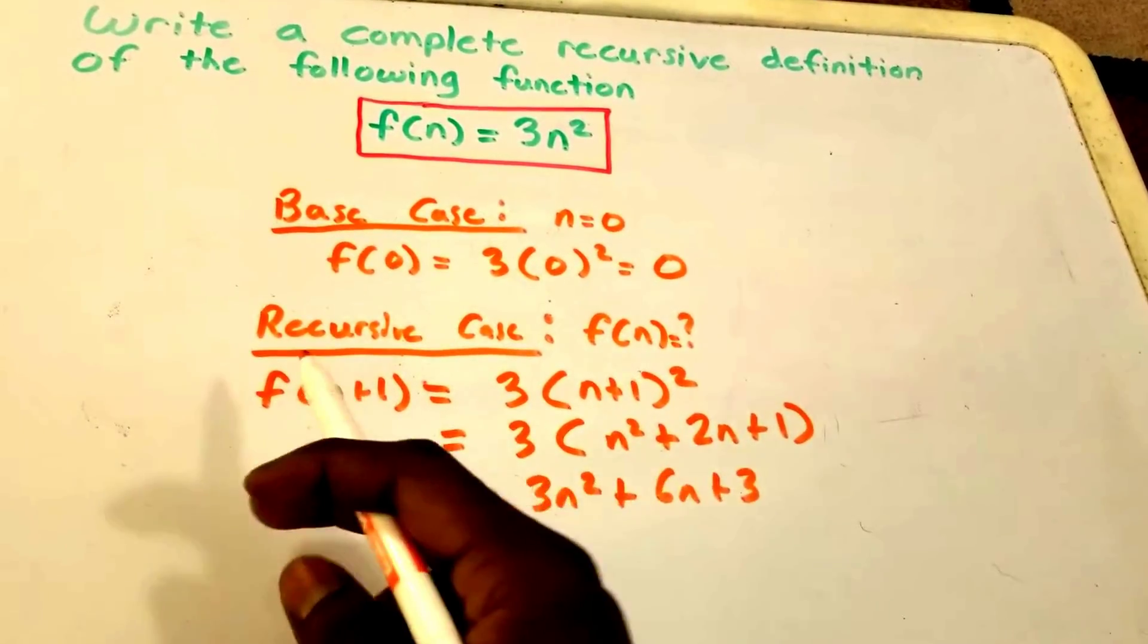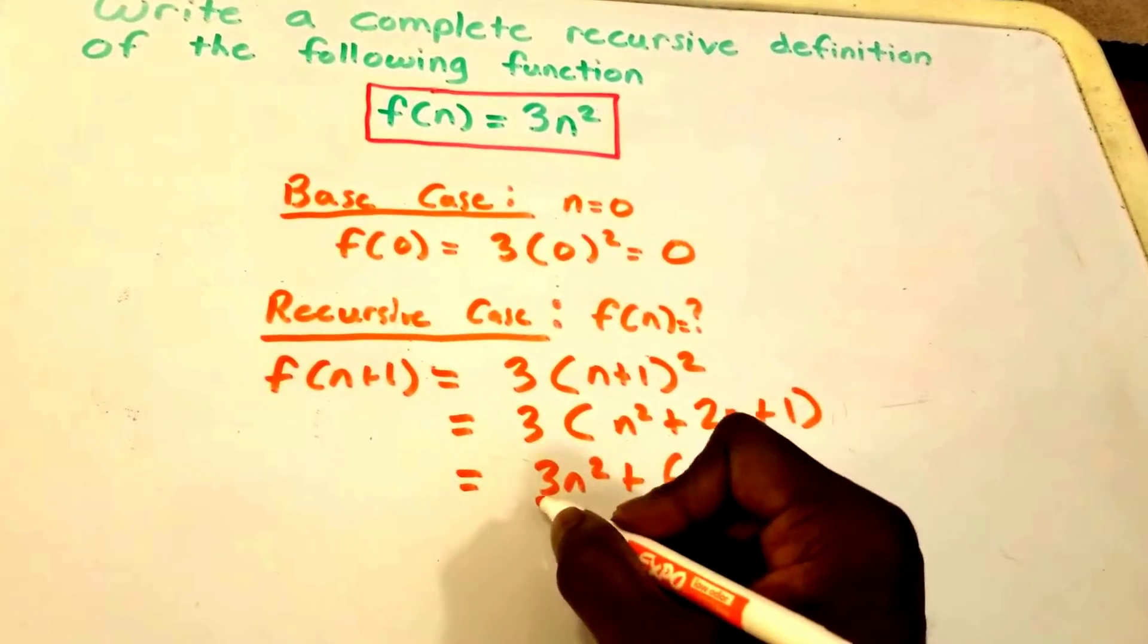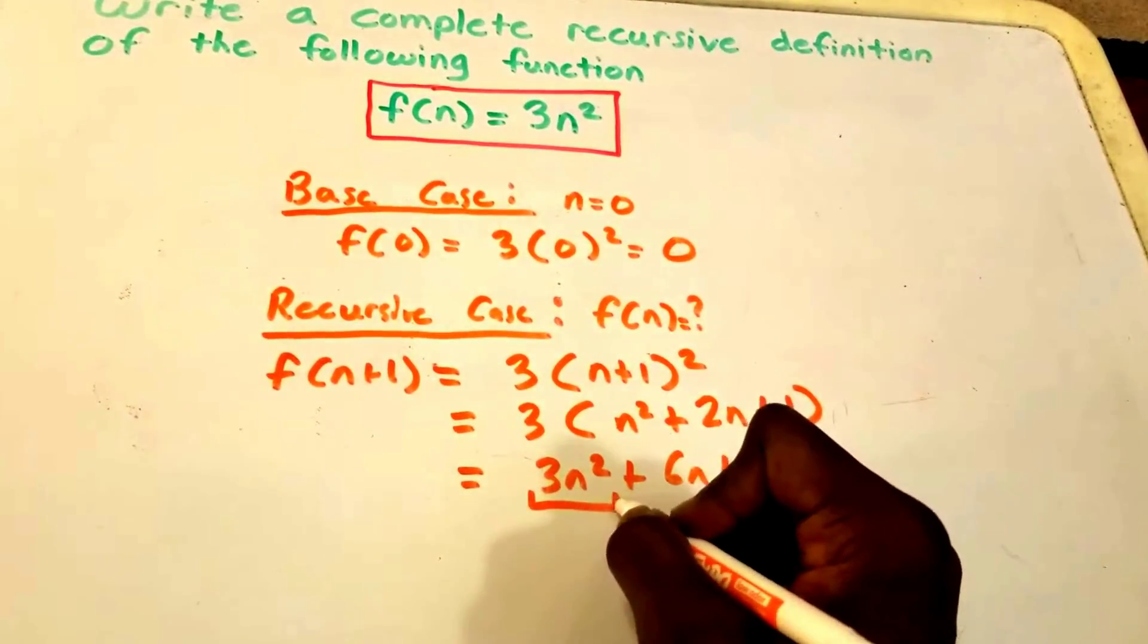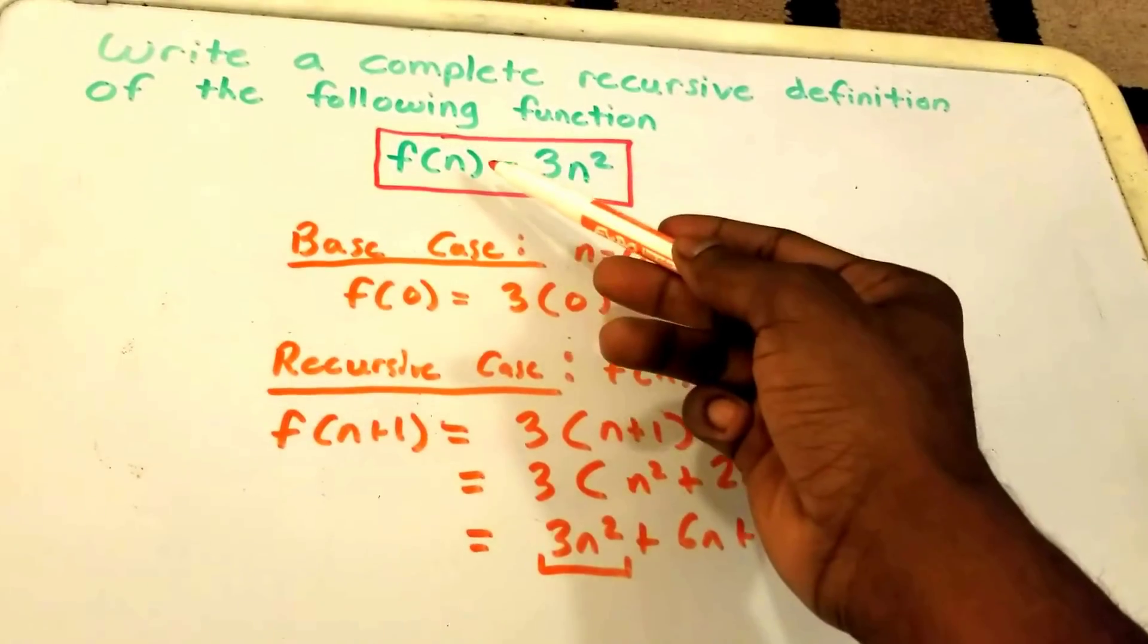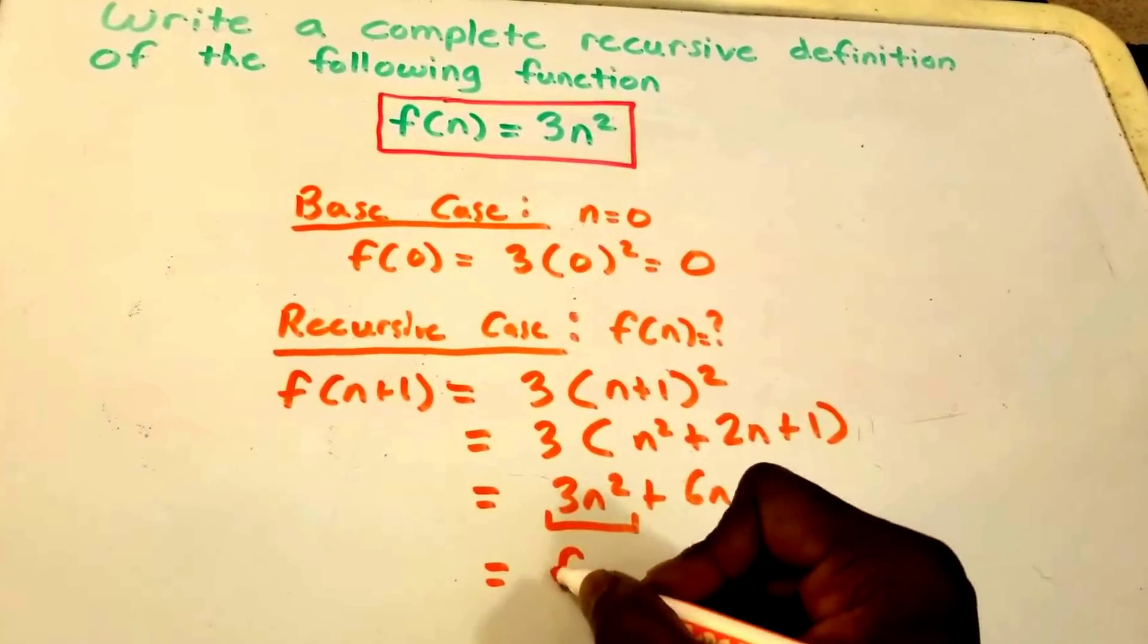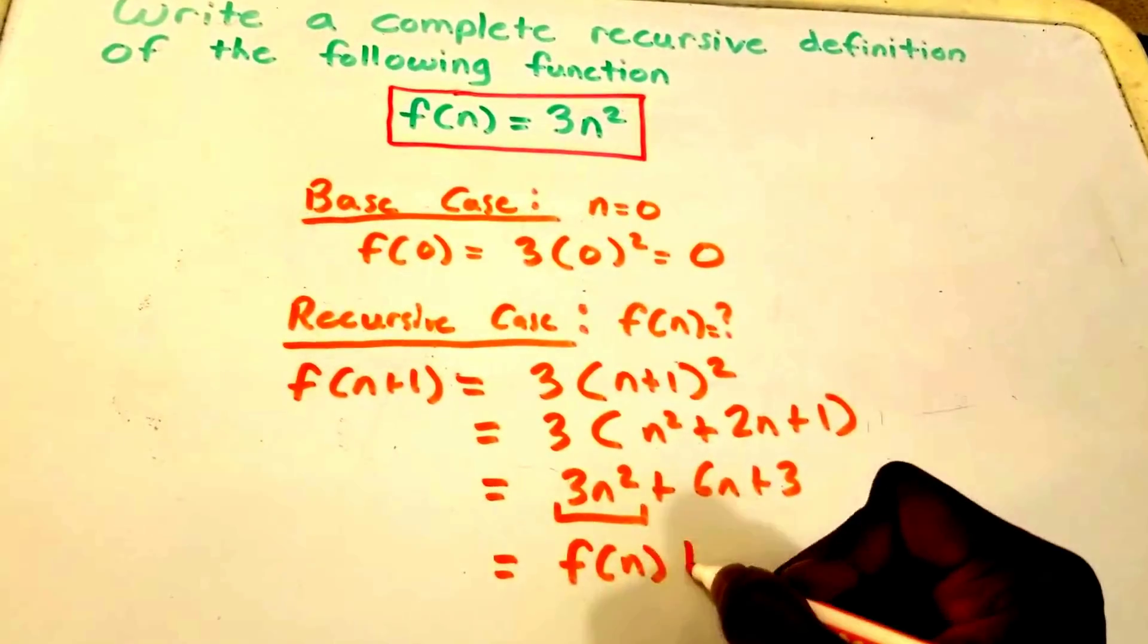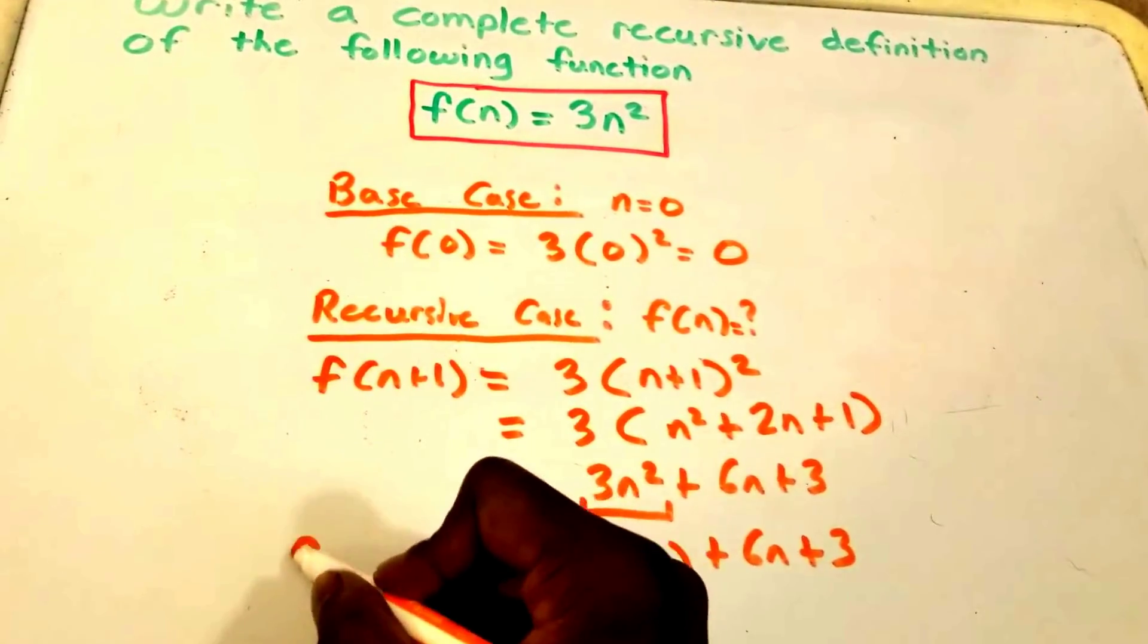So that's what our f(n+1) is equal to. Now what you'll notice is here we have 3n² and 3n² was our f(n), so we can rewrite this equation again and we can say that this is f(n) + 6n + 3, and this is equal to f(n+1).